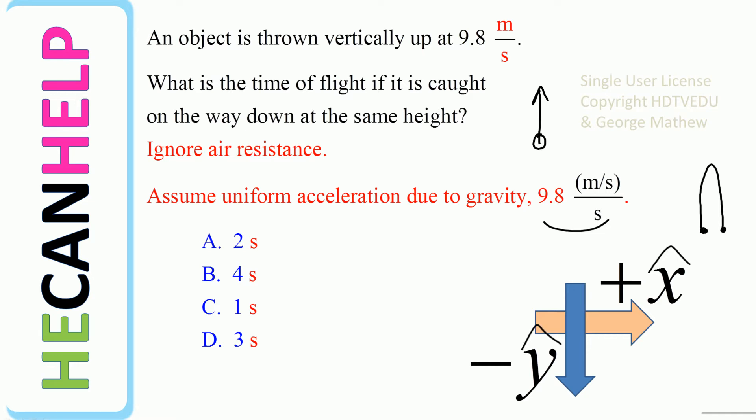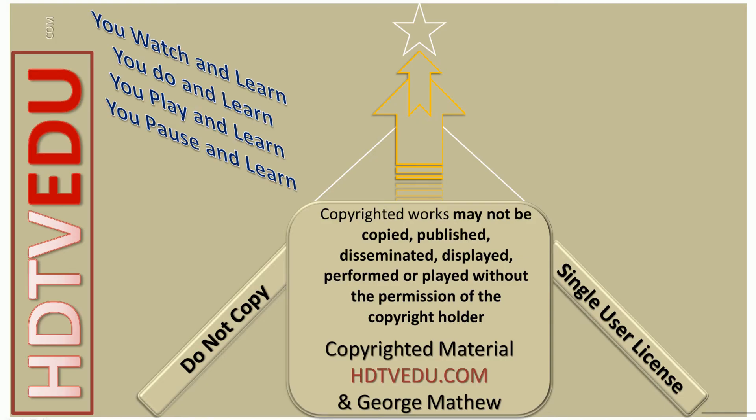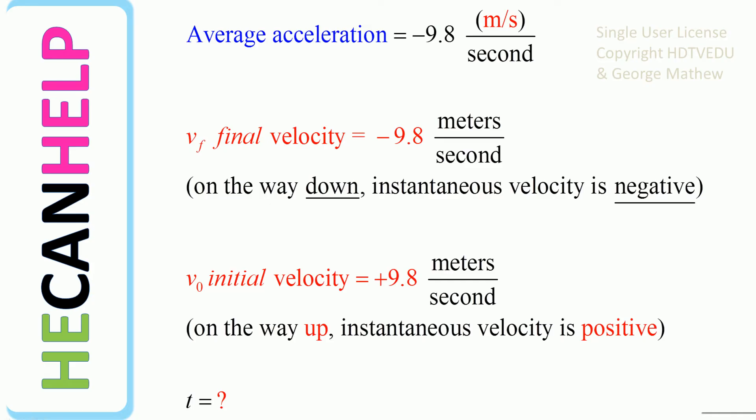So, is it A, 2 seconds; B, 4 seconds; C, 1 second; or D, 3 seconds? The average acceleration is negative 9.8 meters per second per second.